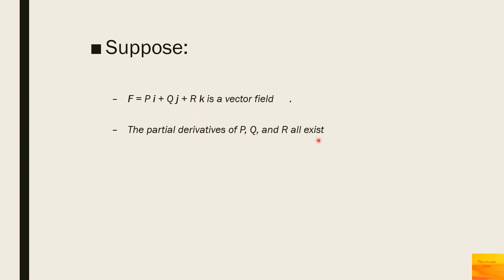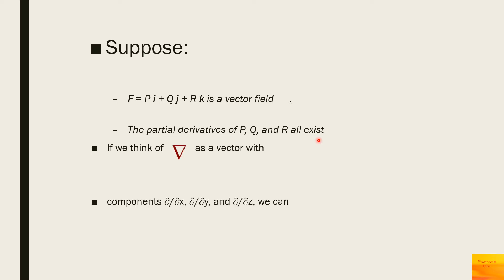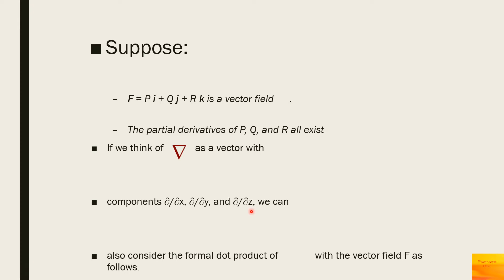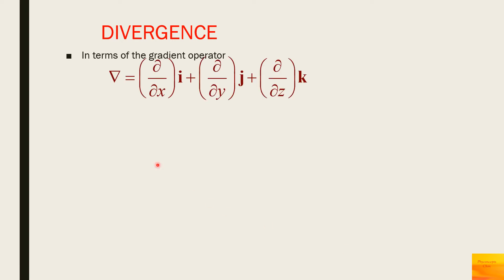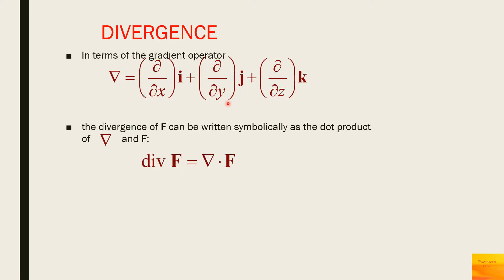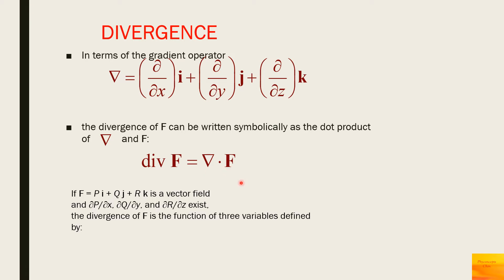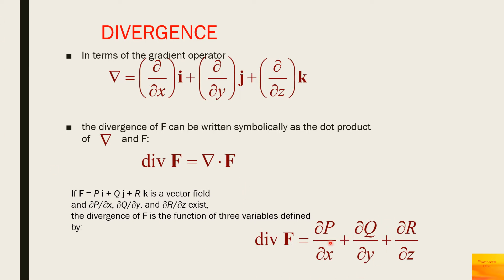If we think of the del operator as a vector with components ∂/∂x, ∂/∂y, and ∂/∂z, we can consider the formal dot product of this del operator with the field F̄. The divergence of F̄ is given as ∇·F̄ = ∂P/∂x + ∂Q/∂y + ∂R/∂z.